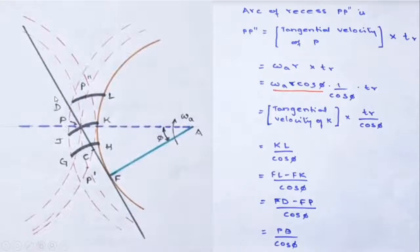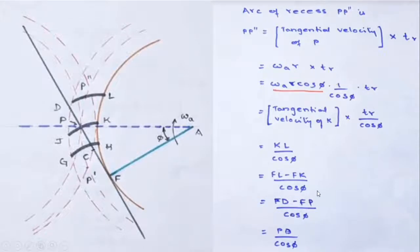Now fl equals fd and fk equals fb. Arc fl becomes equal to straight line fd, and arc fk becomes straight line fb, divided by cos(phi). Simplifying, fd − fp gives pd, so the arc of recess is pd / cos(phi).